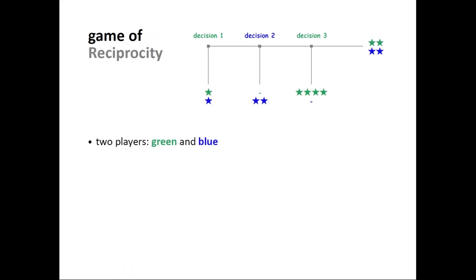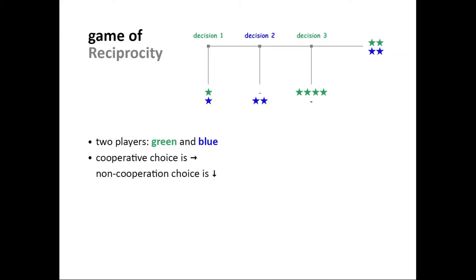To study people's willingness to exploit a kind other, we designed a new game called the game of reciprocity — an extended version of the game of Trust. There are two players, green and blue, who make choices sequentially. Player green makes a decision first, then player blue, then player green again. At each decision node you choose: do I stop the game by playing down, or continue by playing right? The stars represent monetary bonuses — green stars for the green player, blue stars for the blue player.